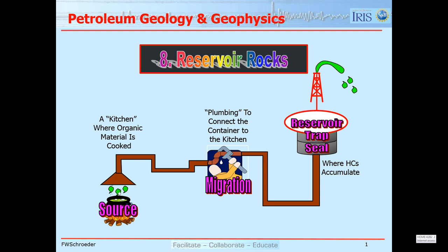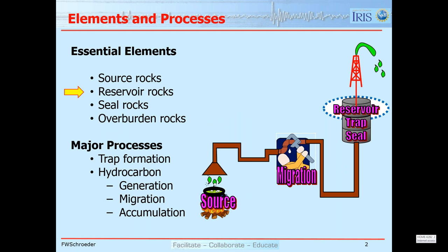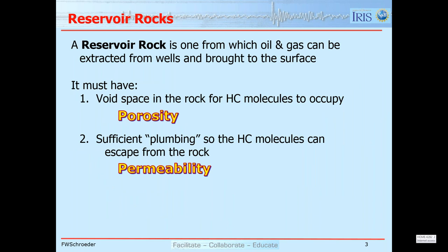I'll talk mostly about conventional reservoirs but I have several slides on unconventional reservoirs, also referred to as resource plays. We have four essential elements: we need source rocks, we need reservoir quality rocks, we need a good sealing lithology, and we need overburden so that the rocks are buried so that hydrocarbons can get generated. Then we have two main processes — trap formation, and hydrocarbon generation, migration, and accumulation. A reservoir is a rock that allows oil and gas to be extracted from it using wells.